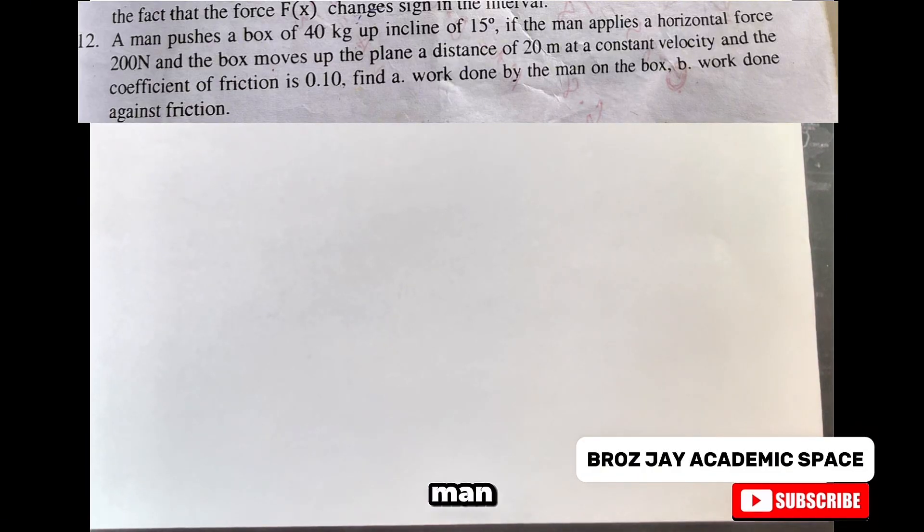Today we'll be looking at a question that says a man pushes a box of 40 kg up an incline of 15 degrees. If the man applies a horizontal force of 200 N and the box moves up the plane a distance of 20 meters at a constant velocity and the coefficient of friction is 0.10, find: A, the work done by the man on the box; B, work done against friction.